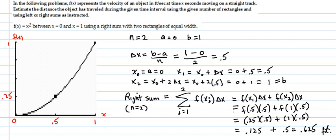f of x represents the velocity of the object in feet per second, and time is at x seconds of the object moving on a straight track. We're going to estimate the distance of the object that has traveled during the time interval given, with the number of rectangles given using left or right sums.